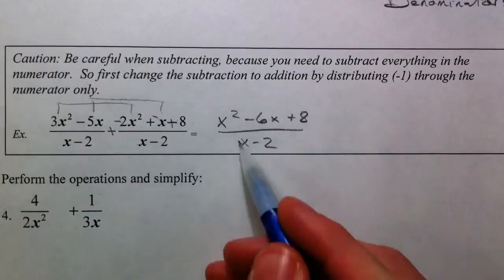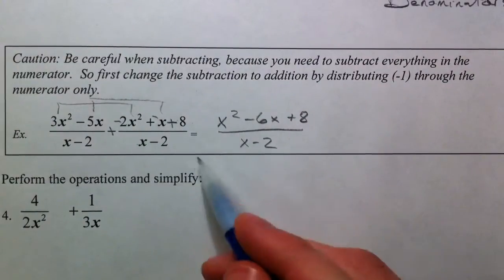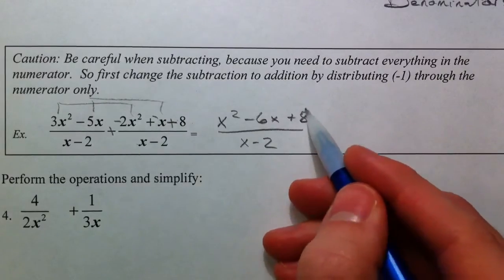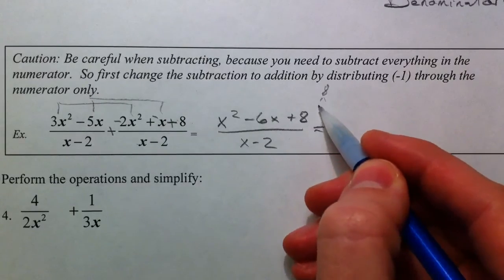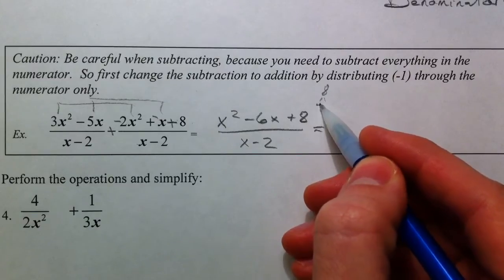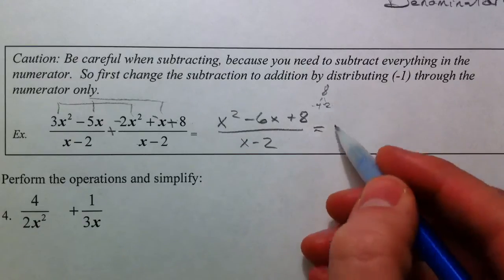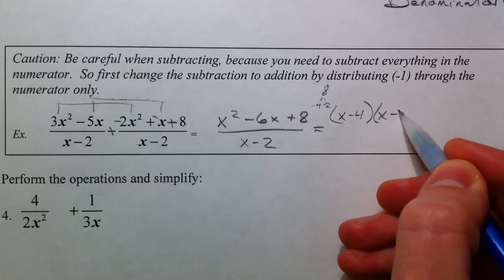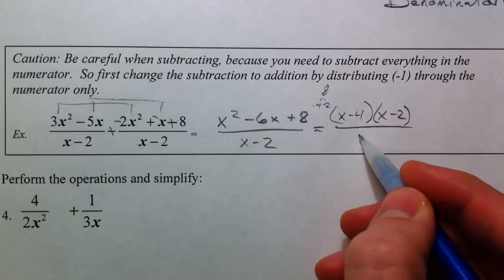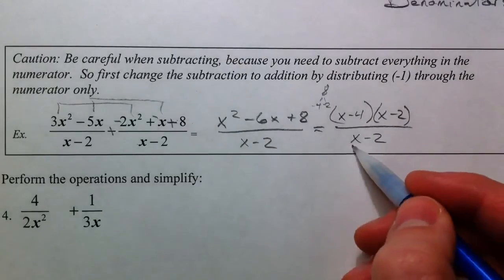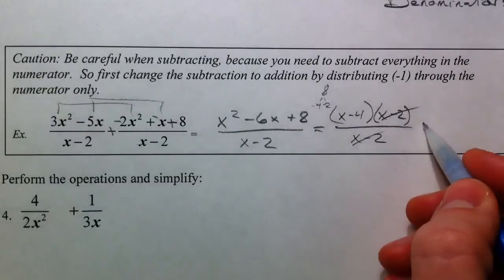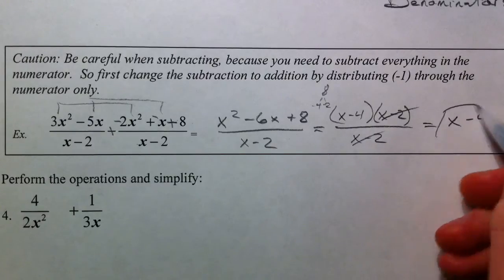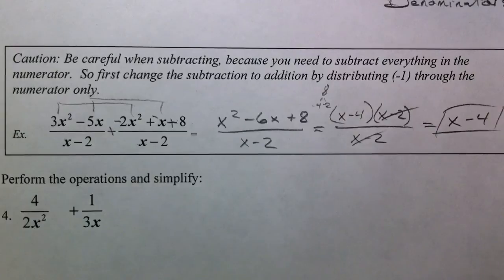One thing to keep in mind: can you simplify further? What multiplies to 8 and adds to 6? That's 4 and 2 — so negative 4 and negative 2. We can factor to get x minus 4 times x minus 2, divided by x minus 2. The x minus 2 factors cancel — only cross out when it's multiplication — and we're finally left with just x minus 4.